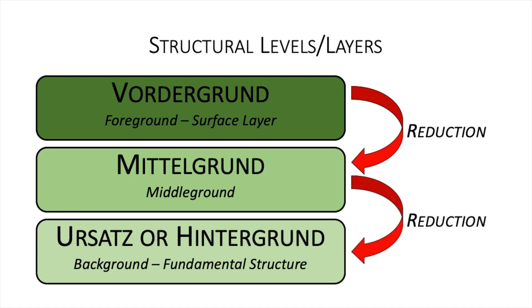We can then reduce the middle ground again to reach an even simpler layer, which is the background. The background is going to be so simple that we can represent a whole orchestral movement with just two lines of notes. Schenkerian Analysis can be summarised as this process of reduction from the actual music at the surface level down to its most basic, fundamental structure. If you understand this, then you're well on your way to performing an analysis yourself.